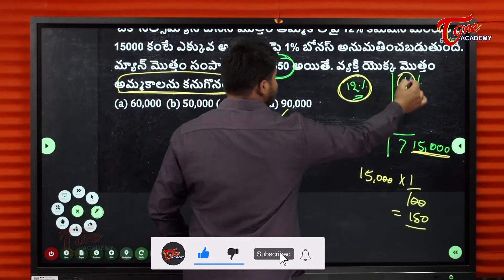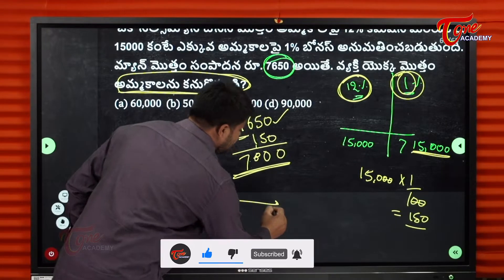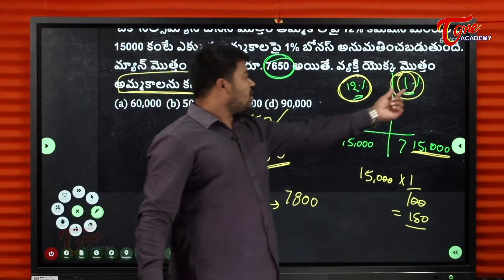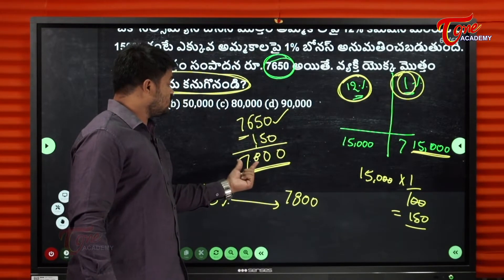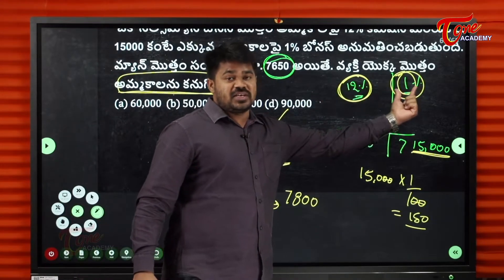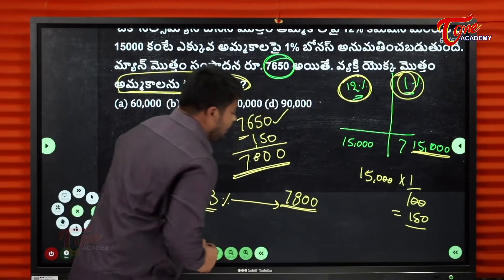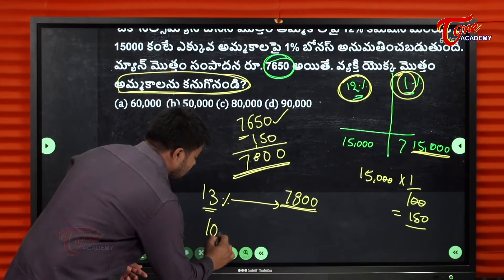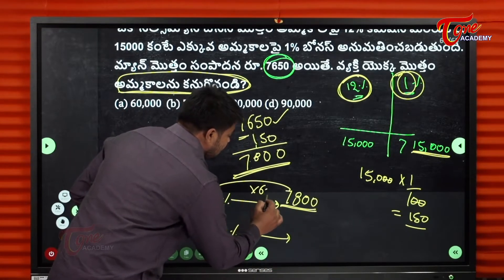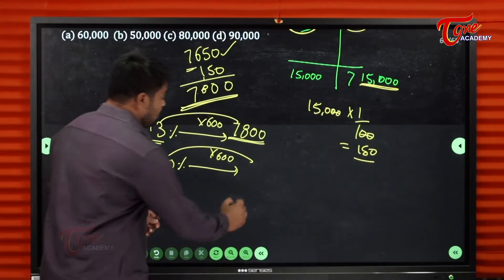Commission plus bonus is 13%. So 13% equals 7,800. The 1% bonus is also added. Total earnings of the salesman: 12% commission plus 1% bonus equals 13%. So 13% is 7,800. This means 100% is 60,000, because 13 × 600 = 7,800 and 100 × 600 = 60,000.